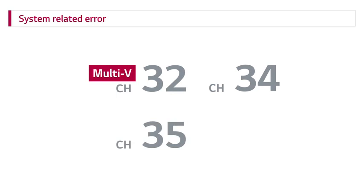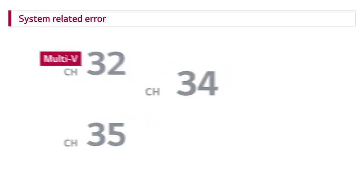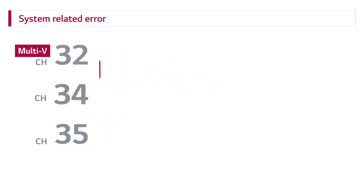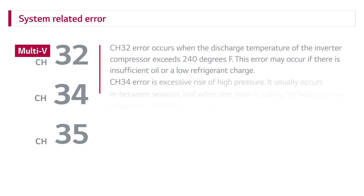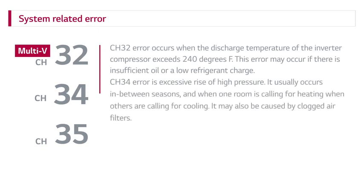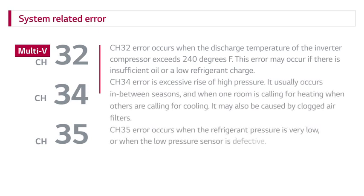CH-32 error occurs when the discharge temperature of the inverter compressor exceeds 240 degrees Fahrenheit. This error may occur if there is insufficient oil in the compressor or possibly a low refrigerant charge.